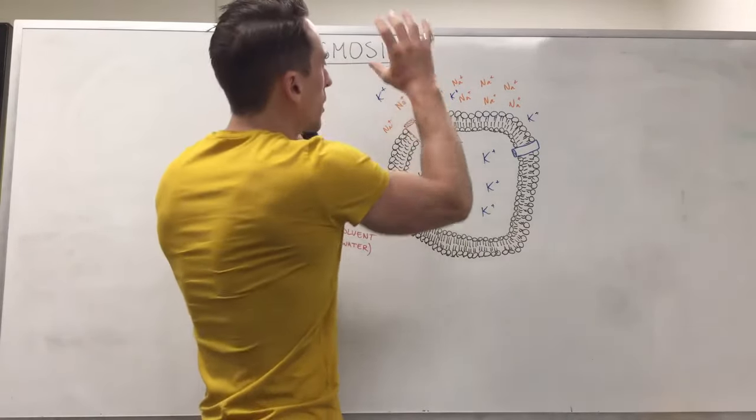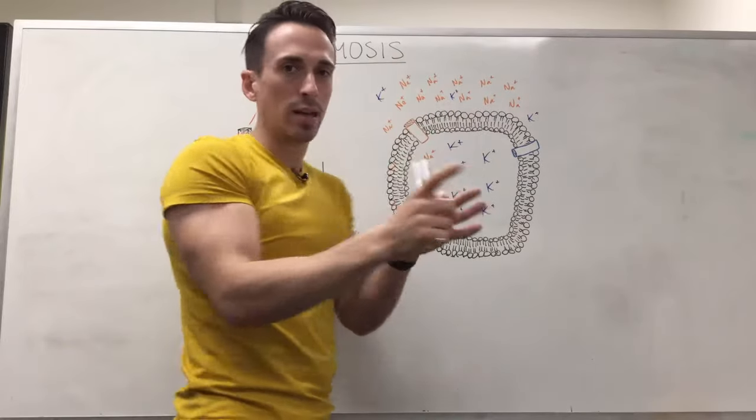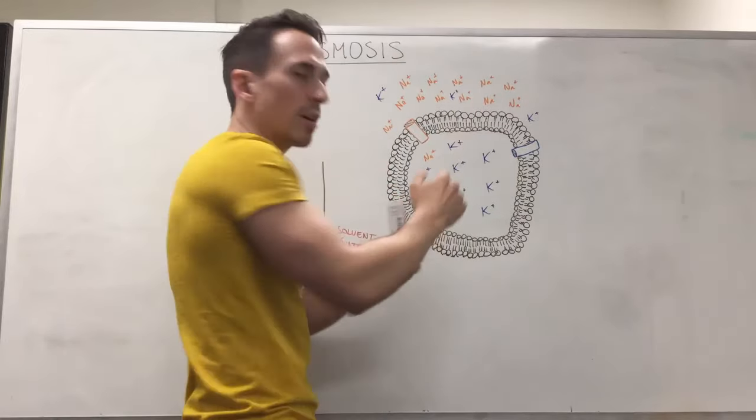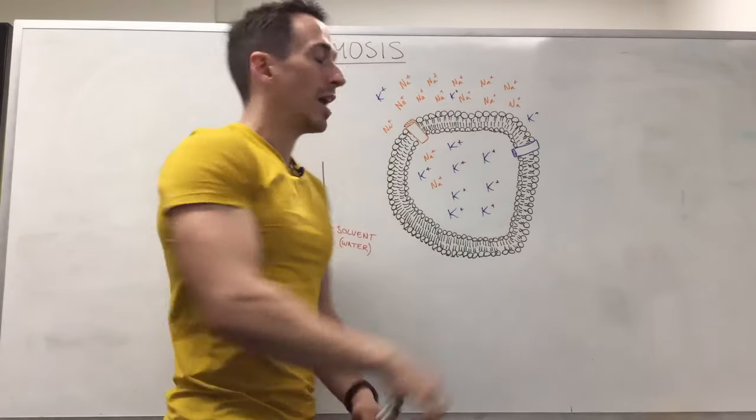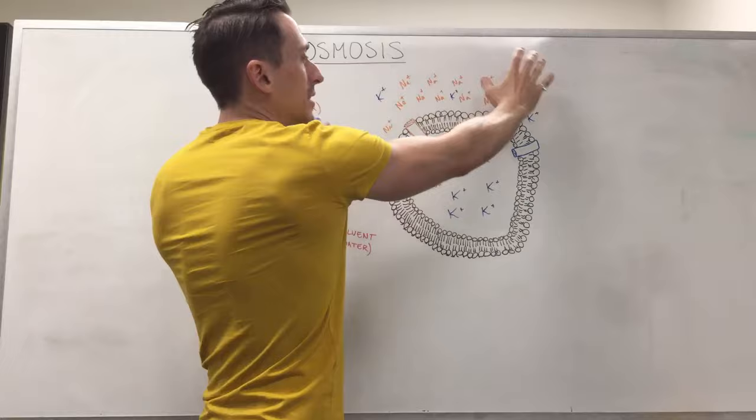So if I were to increase the amount of sodium outside the cell compared to inside the cell, it's unequal and water will want to rush out of the cell. It's doing this to balance out the concentration.